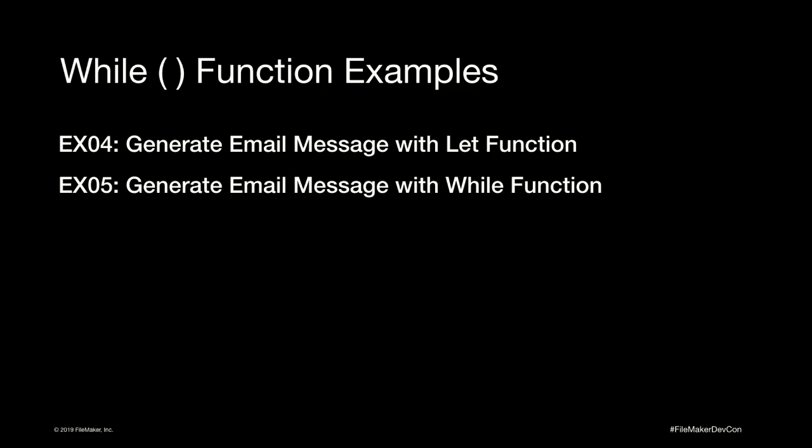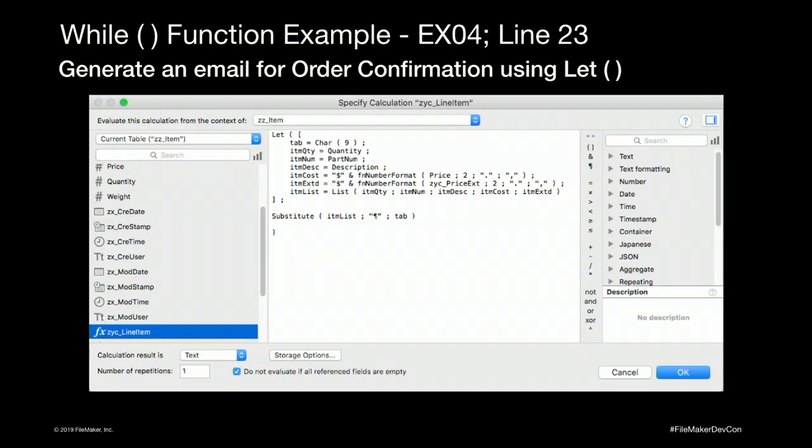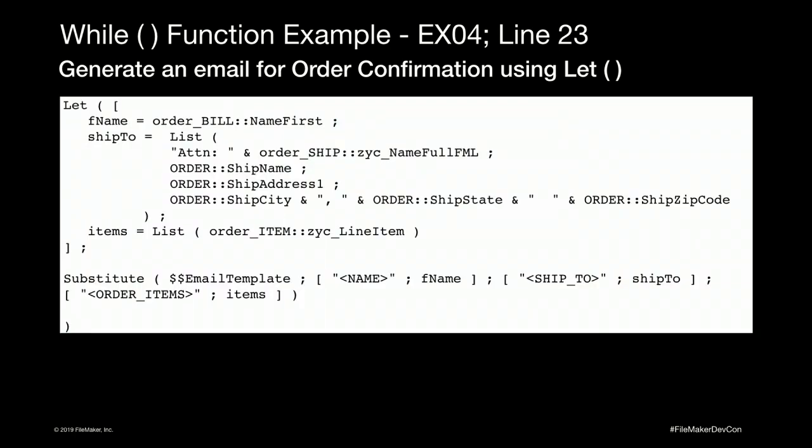Here are two examples — one using Let and one using While — to show the differences. A client wanted to send an email with order details in the body, not as a PDF. Before While, I'd create a calculated field in the line items table assembling the text with a separator character, then use the List function to grab that from related records and drop it into the script with a Substitute. It works, but it creates overhead — a calculation field whose only purpose is to populate that email message. While now lets us do all of that in a single script step.